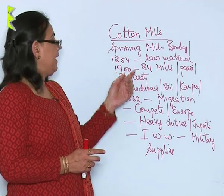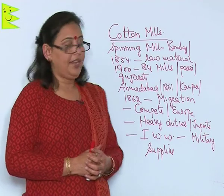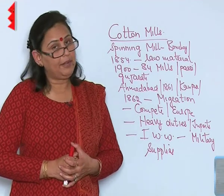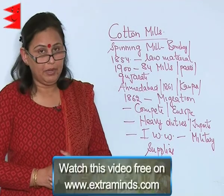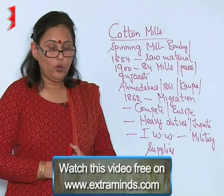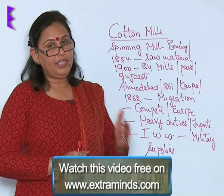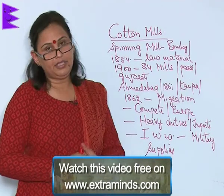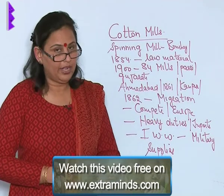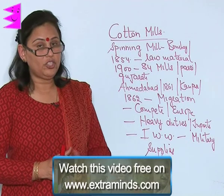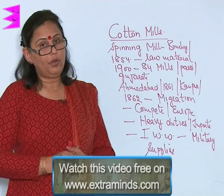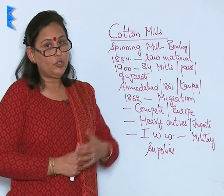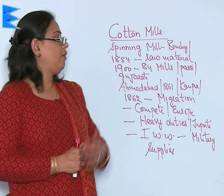By 1900, we see that 84 mills had been established in Bombay, and the owners of these mills were generally the Parsis and the Gujaratis, who were very rich and who wanted to invest money to bring in more profits.